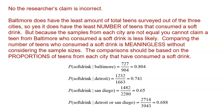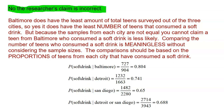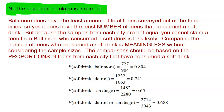No, the researcher's claim is incorrect. When answering any question on the AP test, answer the question directly. Baltimore does have the least number of total teens surveyed out of the three cities, so yes, it does have the least number of teens that consumed a soft drink. But because the samples from each city are not equal, you cannot claim a teen from Baltimore who consumed a soft drink is less likely. Comparing the number of teens who consumed a soft drink is meaningless without considering the sample size. The comparison should be based on the proportion of teens from each city, not the number.